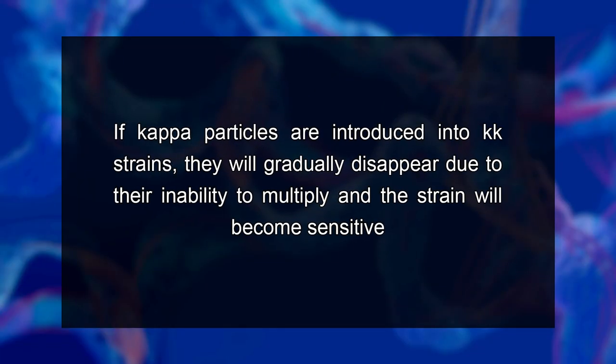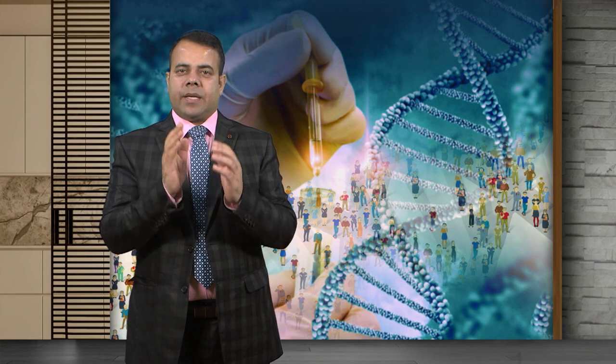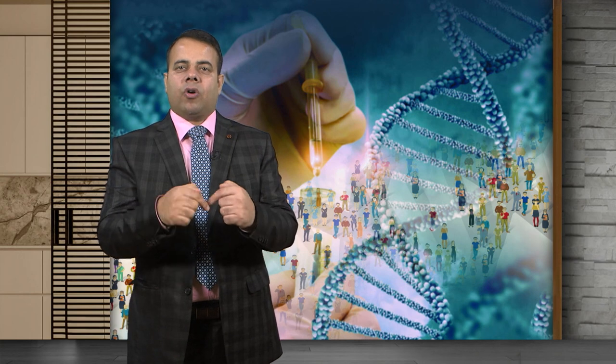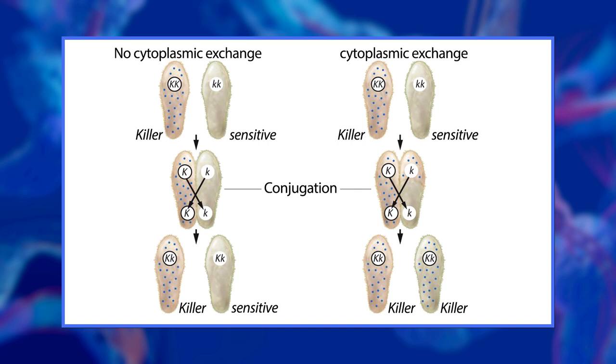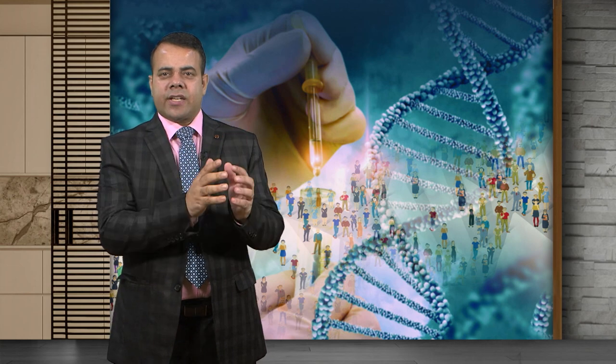Even if kappa particles are introduced into kk strains, they will gradually disappear due to their inability to multiply and the strain will become sensitive. Though the multiplication of kappa particles is dependent on nuclear genes, their action is independent of nuclear genes. The inheritance of kappa particles can be studied by conjugation between killer and sensitive strains. The transmission of kappa particles — that is the killer toxin — is through cytoplasm, but maintenance of kappa particles and production of paramecin is controlled by K in the nucleus. The killer strains carry dominant alleles KK and the sensitive strains carry kk; therefore, this trait is transmitted through cytoplasmic heredity.